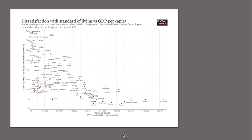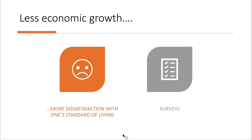Looking at dissatisfaction with standards of living: the vertical axis shows the percentage reporting dissatisfaction and the horizontal axis shows per capita GDP. As you'd expect, the poorer you are, the more dissatisfied you are with your standard of living. In Luxembourg, about 10% are dissatisfied with an average GDP of $90,000 per year. In Madagascar, 80% of people are dissatisfied, with per capita GDP closer to zero than to $10,000. Less growth correlates with more dissatisfaction with one's standard of living.